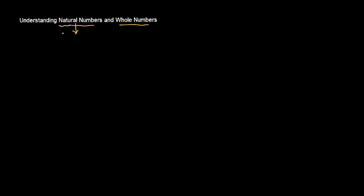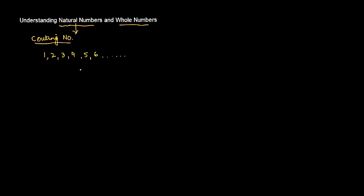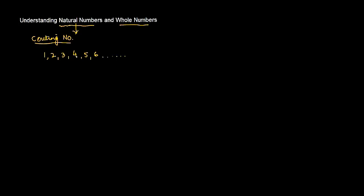In this video we are going to learn about natural numbers and whole numbers. Natural numbers, as the name itself suggests, are certain numbers which come naturally to us. These are also known as the counting numbers. Since childhood, whenever you were told to do counting, you said one, two, three, four, five, six, and so on.